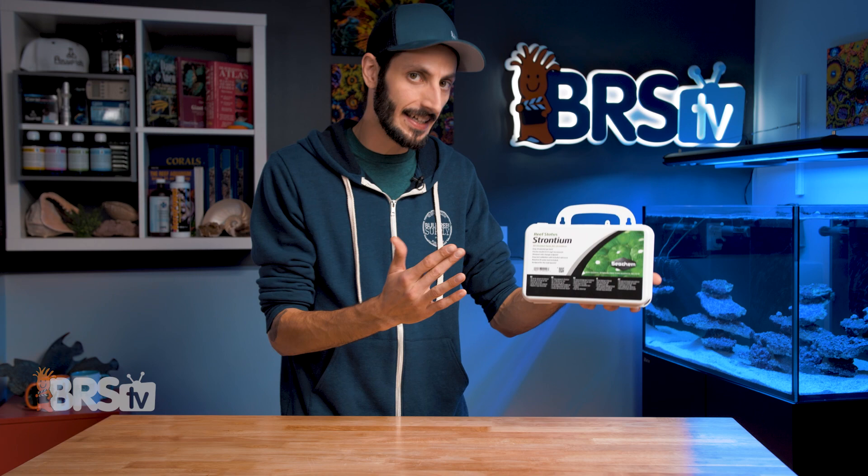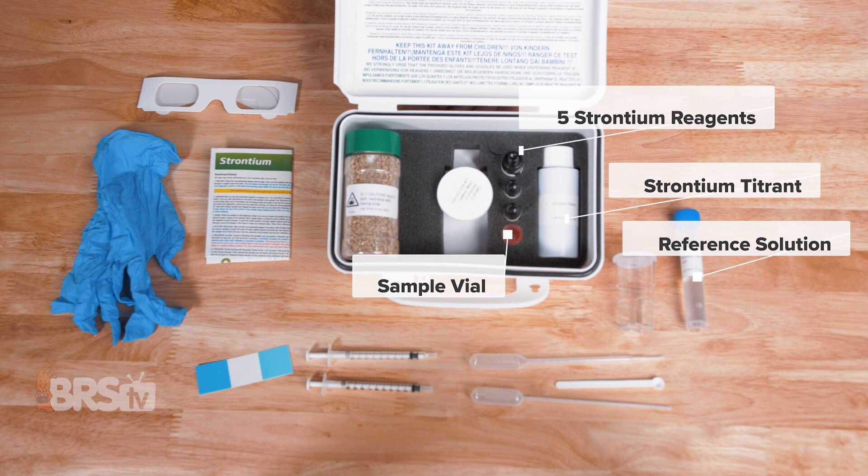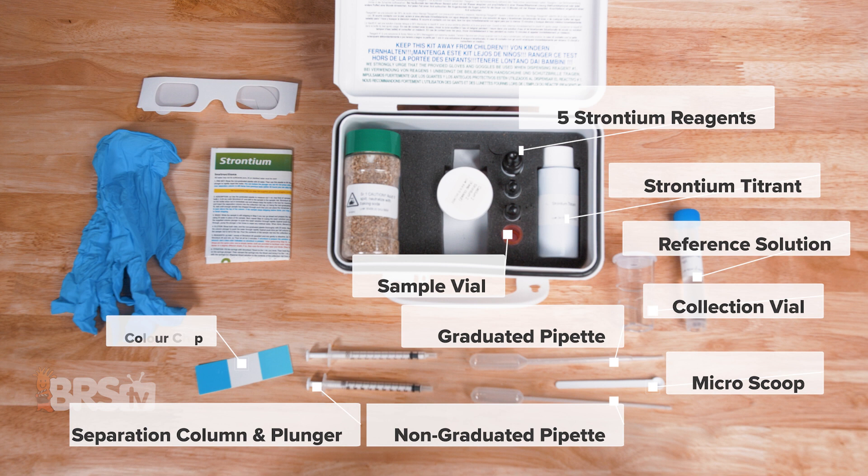In the hard case, you'll find strontium reagents number one through five, as well as the strontium titrant and the strontium reference solution. You also get a sample vial, graduated pipette, non-graduated pipette, separation column, separation column plunger, micro scoop, collection vial and cap, as well as your color chip and the titration syringe.